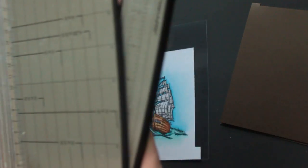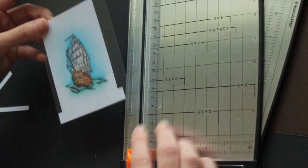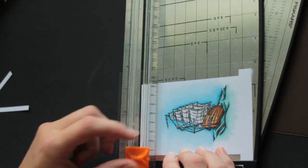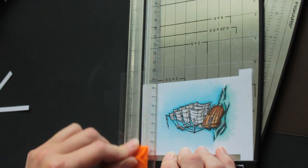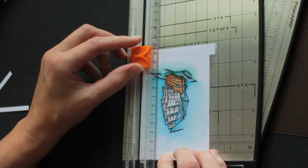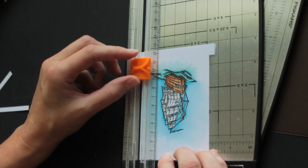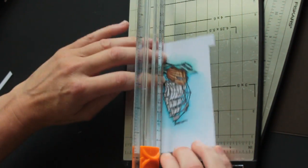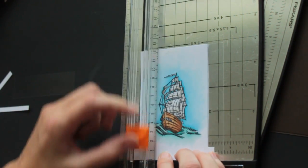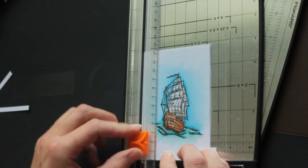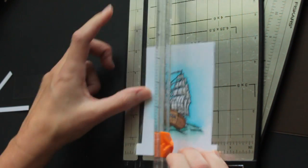You could have the acetate already the right size. But I found this is way easier because then, in case when you stamp your plastic, your sheet moves a little bit, you can just cut it down to the size that you need when it moves. Just one more way to ensure you get it right.